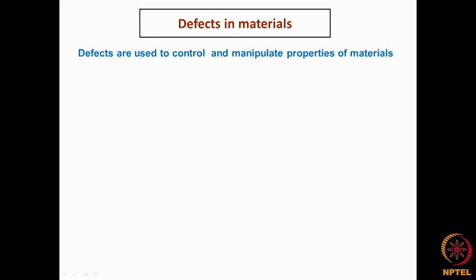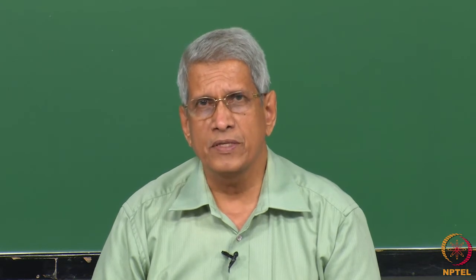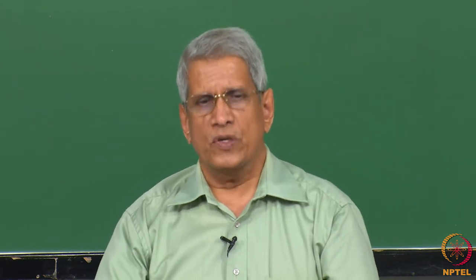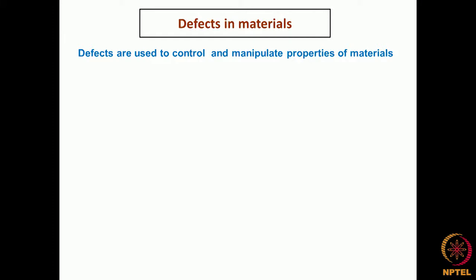If a material does not have any defect, its properties are fixed and then this material is of no use, because we cannot process this material, we cannot shape it into different forms. All these things we do in a material because it contains defects. So essentially what it means is that defects can be used to control and manipulate the properties of the material.